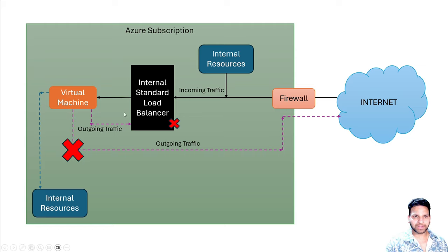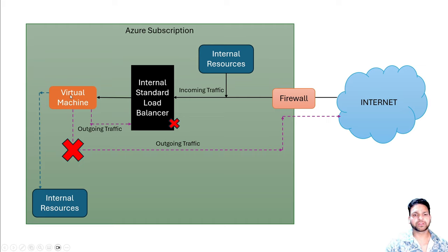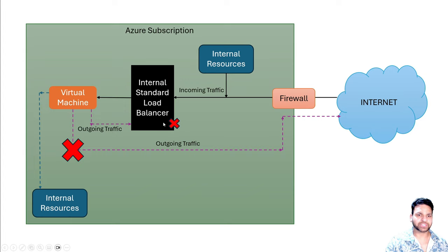In the case of the internal load balancer, if traffic is coming from the internet, it can't reach the private IP of the standard load balancer directly — the traffic should be coming through a firewall. So either traffic is coming through the firewall or through internal resources. The incoming traffic is distributed by the standard load balancer to the virtual machine, but the outgoing internet traffic is still a problem because the default routes are overwritten and the internal load balancer doesn't know how to send traffic outside the Azure environment.